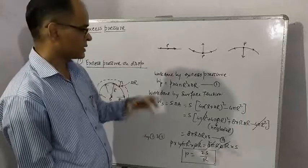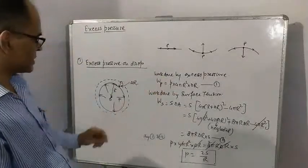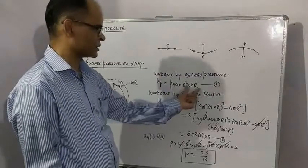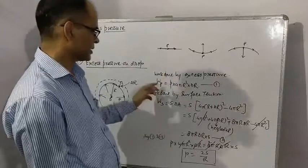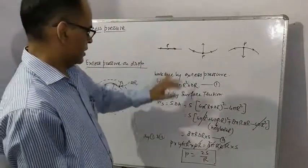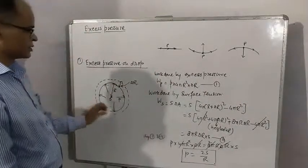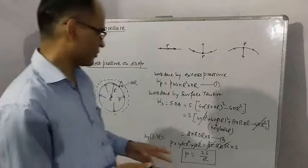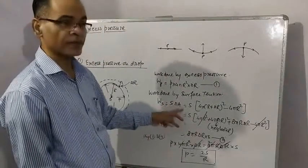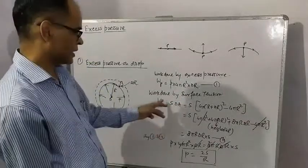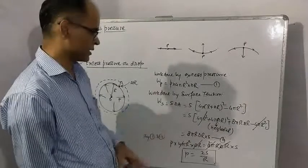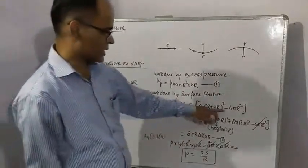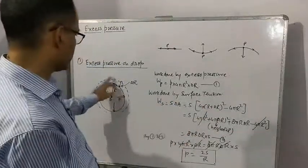Now let us find work done due to surface tension. Since it is a drop having one free surface, work done will be S ΔA. If it was two free surfaces you would write 2S ΔA. So S ΔA, where ΔA is change in surface area. Final radius becomes r plus Δr, so final area will be 4π(r + Δr)² and initial area is 4πr².